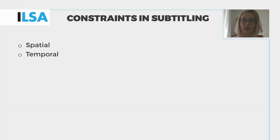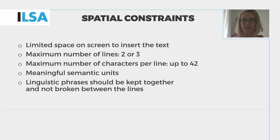Subtitling is famous — or infamous — for its constraints. Two major types of constraints are spatial and temporal, resulting from the limited space and time available for subtitles. Spatial constraints stem from the limited space available on screen to insert the text. Since we cannot cover the entire screen with text, there's normally a limit of two to three lines of text placed usually at the bottom of the screen. Each line normally contains up to about 42 characters, including spaces and punctuation. The text in the subtitles should be divided into meaningful semantic units. Linguistic phrases should be kept together within one line and not broken between the lines.